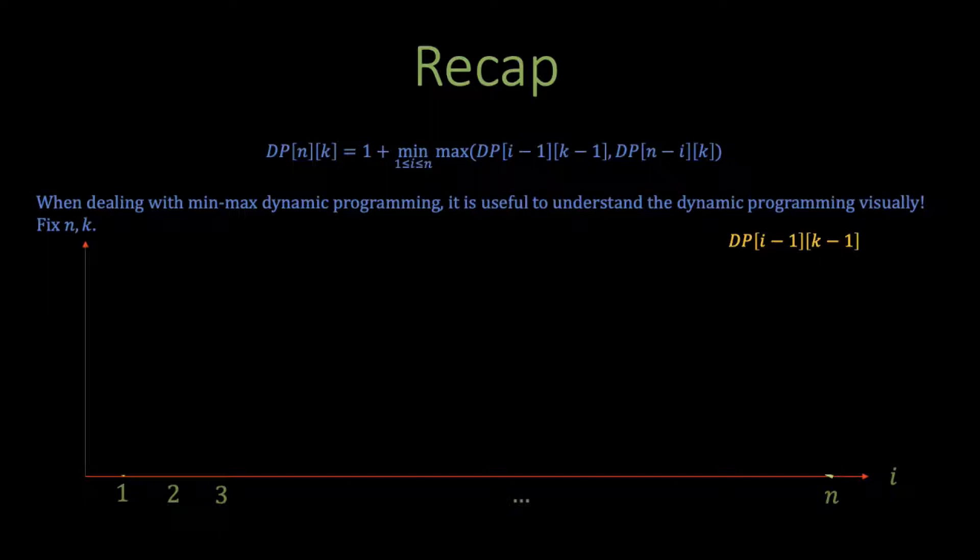Now, if you spend enough time, I'm sure you can see what is happening. As you increase i, you have access to the same fixed number of eggs, k-1 in this case. However, as i increases, i-1 also increases, which means that you're searching over more and more floors. But, intuitively, if you have the same number of eggs, but the number of floors that you must search over is increasing, then that also means that the number of moves that takes you to find floor f with certainty either increases or at least stays the same. In other words, DP[i-1][k-1] is non-decreasing as i increases.